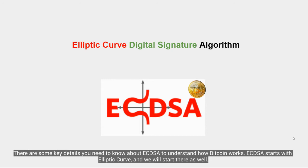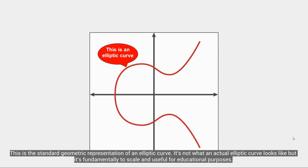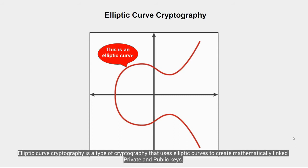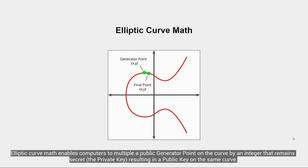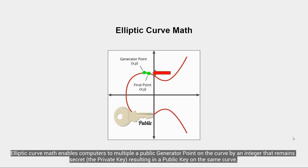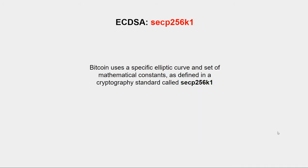ECDSA begins with elliptic curve, and we will start there as well. This is the standard geometric representation of an elliptic curve — it's fundamentally to scale and good for educational purposes. Elliptic curve cryptography is a type of cryptography that uses elliptic curves to create mathematically linked private and public keys. Elliptic curve math enables computers to multiply a public generator point on the curve by an integer that remains secret — the private key — resulting in a public key on the same curve.